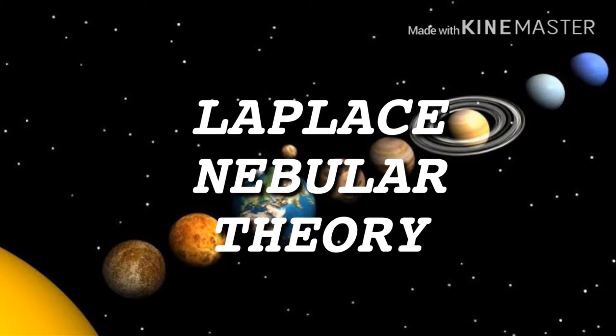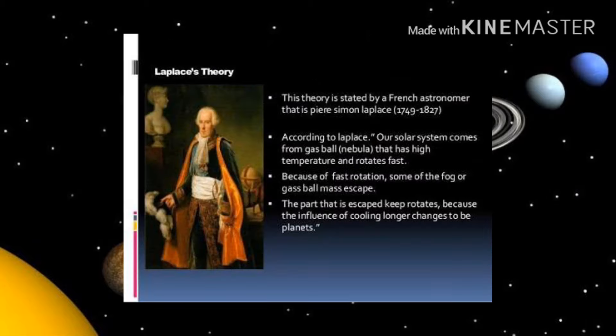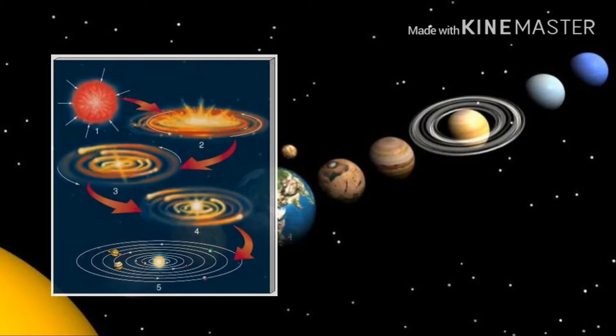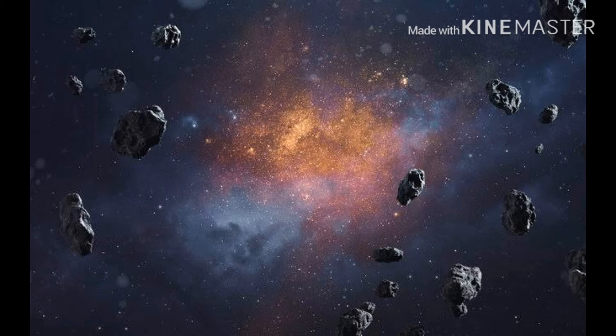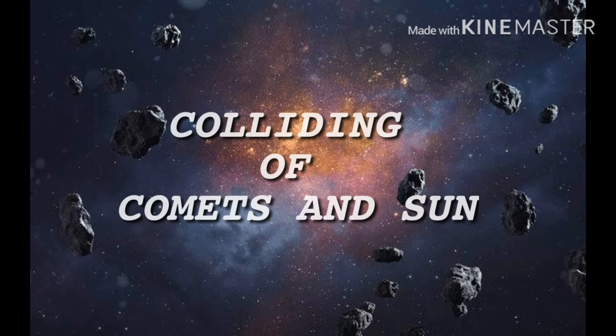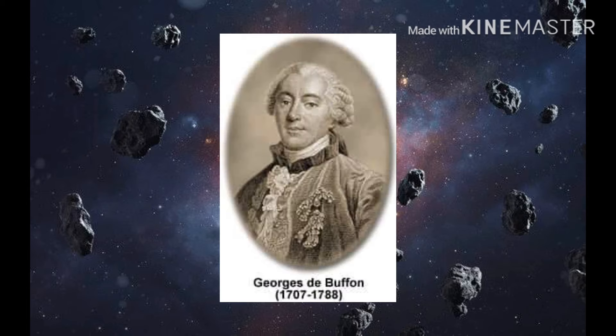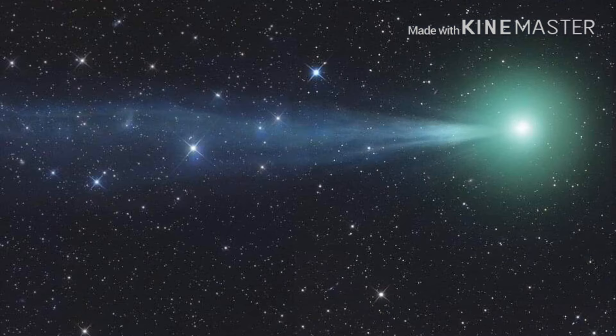The third is Laplace's Nebular Theory by Simon Laplace. A slowly rotating nebula collapses under gravity, forming an oblate spheroid due to the increase in its spinning rate. Fourth, the Colliding of Comets and Sun by George Louis Laclerc and Comte de Buffon in the 1700s. Planets were produced because of the collision of comets and the sun.